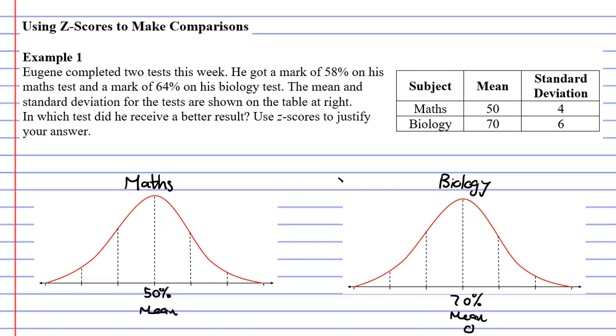Remembering that the mean has a z-score of 0. Now looking at maths, we have a standard deviation of 4. That means as we move to the right, we add 4 each time. So we're going to get 54%, 58%, and 62%. We need to label our z-scores. The first one's plus 1, then plus 2, then plus 3. Now we want to move to the left of our average mark in maths. This time we're going to subtract our standard deviation of 4%. So 50 minus 4 gives us 46%, 46 minus 4 is 42%, and 42 minus 4 is 38%. And we need to write our z-scores as negative 1, negative 2, and negative 3.